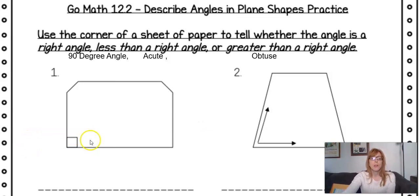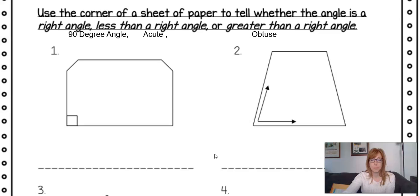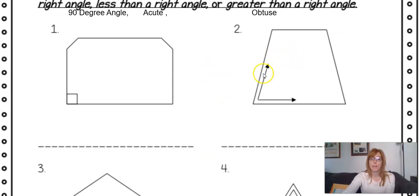So down here, you see this little square that obviously lets you know that it is a 90 degree right angle. Then you have this angle right here.